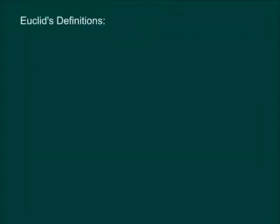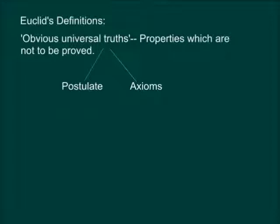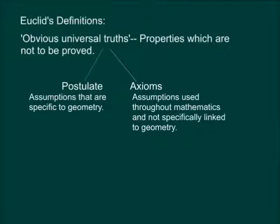Euclid assumed certain properties which were not to be proved. These assumptions are actually obvious universal truths. He divided them into two types, postulates and axioms. He used the term postulate for the assumptions that were specific to geometry. Axioms on the other hand were assumptions used throughout mathematics and not specifically linked to geometry.